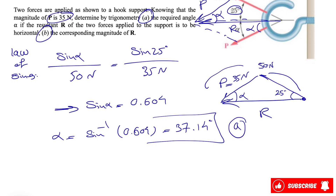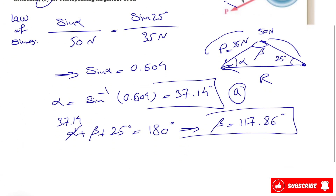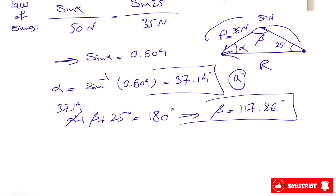For part (b) we need to find the magnitude of R. Since the sum of all angles in a triangle is 180 degrees, if we call this angle beta, we have alpha plus beta plus 25 degrees equals 180 degrees. We already know alpha is 37.14 degrees, so beta equals 117.86 degrees.